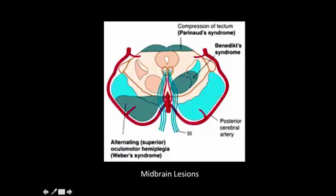In Benedict syndrome, a slightly medial and somewhat lateral area is involved. The third nerve nucleus is involved, leading to a down-and-out gaze. The medial lemniscus is also involved, causing contralateral loss of position and vibration sense, and there is cerebellar ataxia because the spinocerebellar pathway is involved.